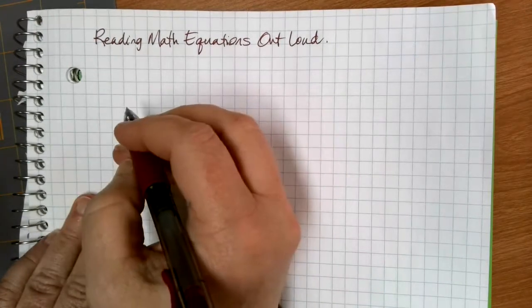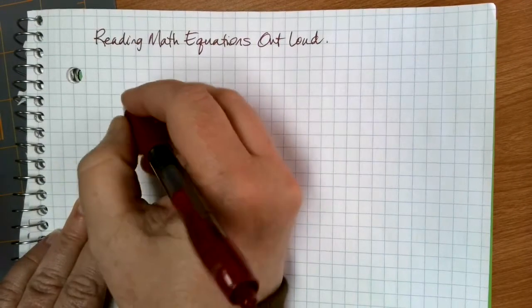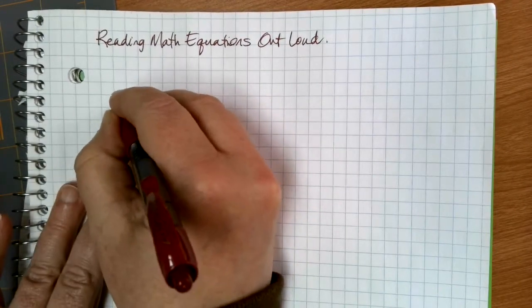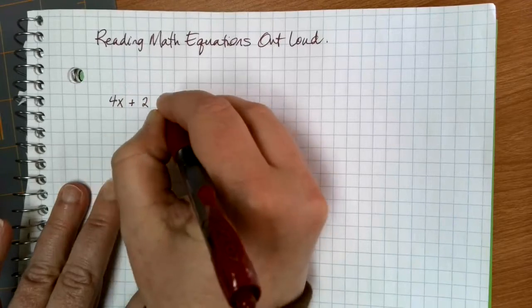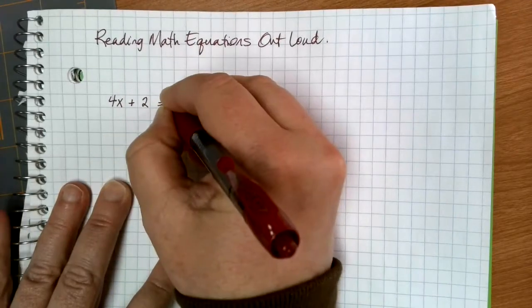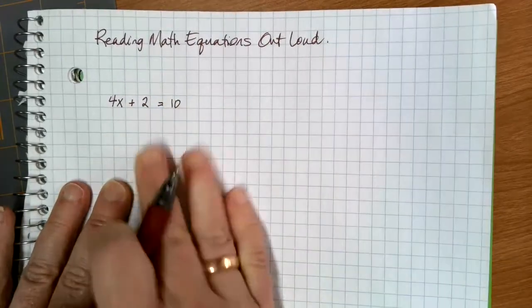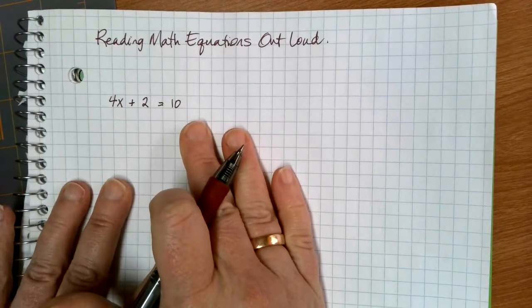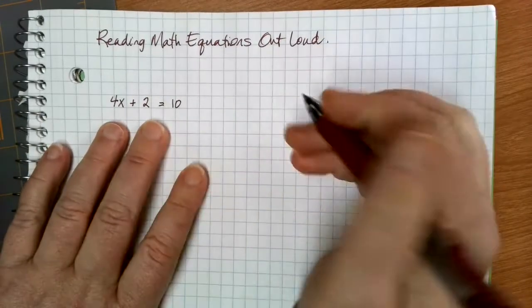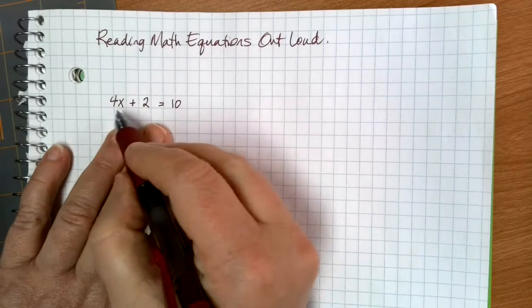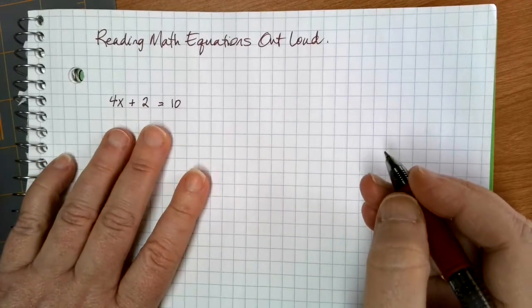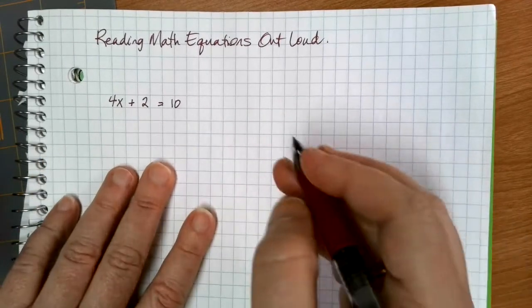Let's suppose that I have an expression like this: 4x plus 2 equals 10. And I want to describe what's going on here in words. If I want to talk about both the multiplication and the addition, I do need to be careful about the way that I write that.